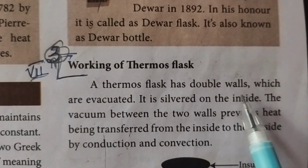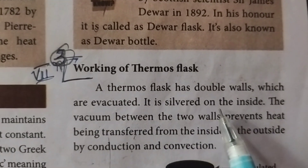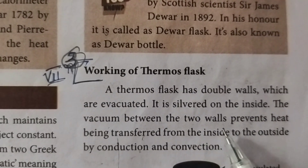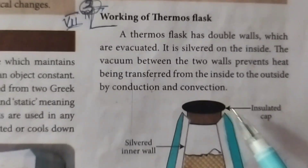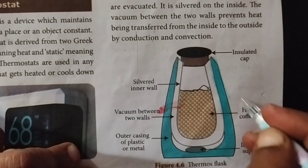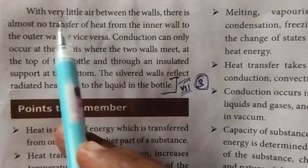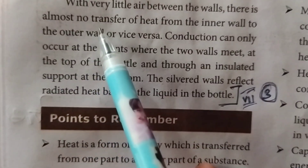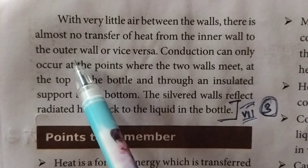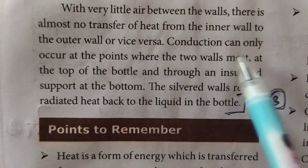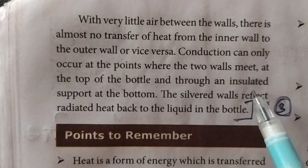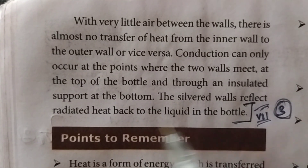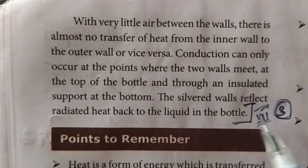A thermos flask has double walls which are evacuated and silvered on the inside. The vacuum between the two walls prevents heat being transferred from the inside to the outside by conduction and convection. With very little air between the walls, there is almost no transfer of heat from the inner wall to the outer wall or vice versa. Conduction can only occur at the point where the two walls meet, at the top of the bottle and through an insulated support at the bottom. The silvered walls reflect radiated heat back to the liquid in the bottle.